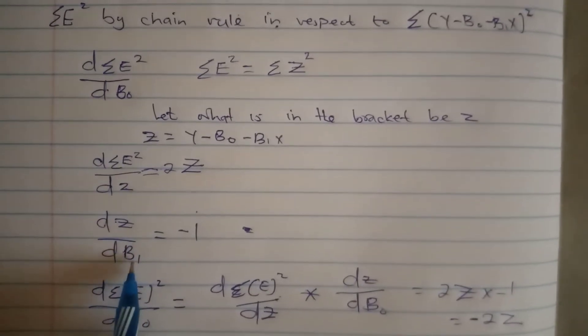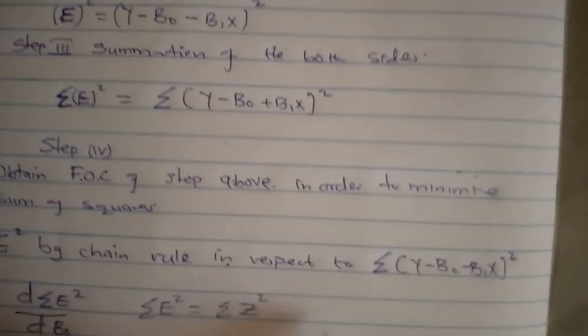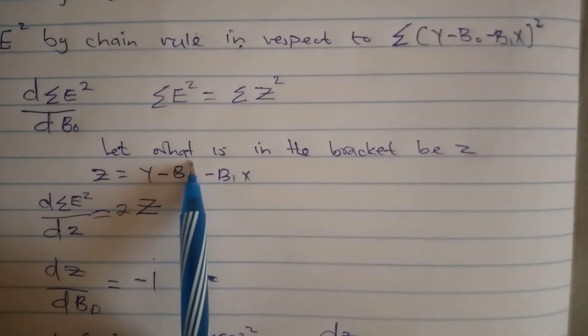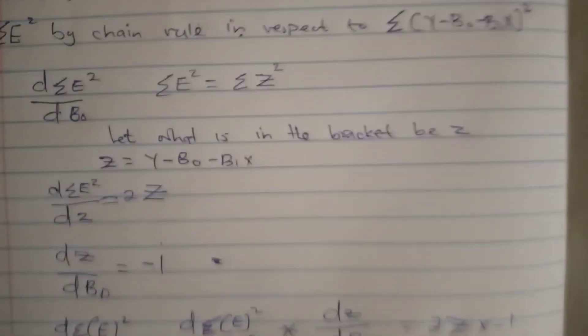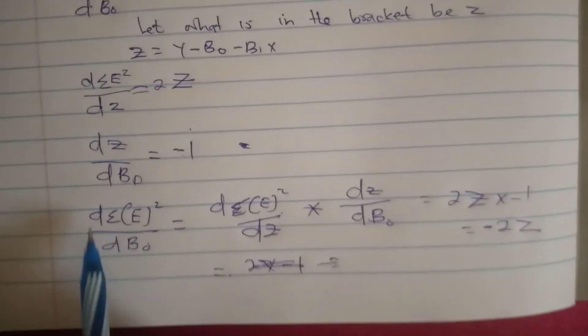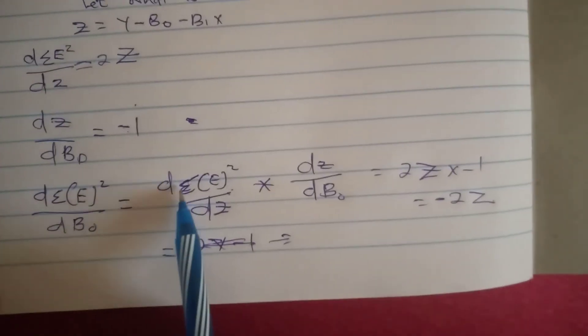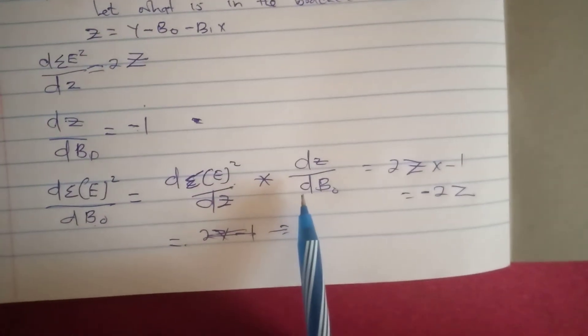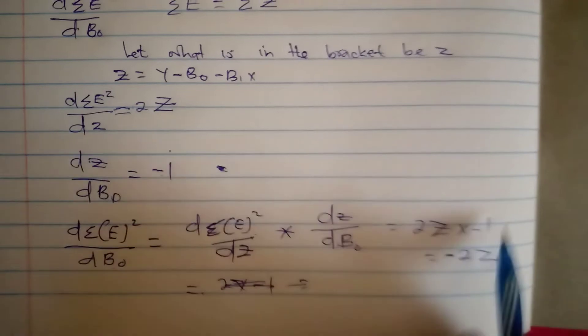Then dZ/dB₀ we get negative one from this equation. This is constant which is zero, this is constant which is zero, here is raised to negative one times negative one, so you get negative one. What we are looking for is summation of E squared over dB₀, which equals 2Z times dZ/dB₀, which is 2Z times negative one, which is negative 2Z.